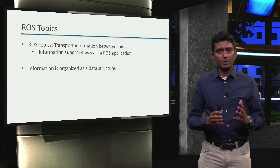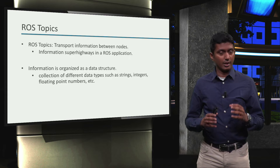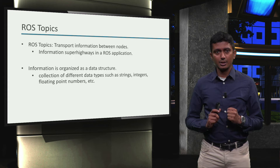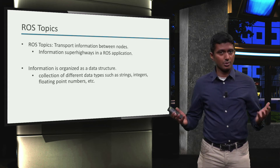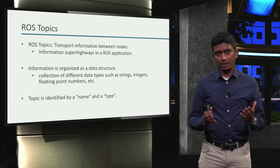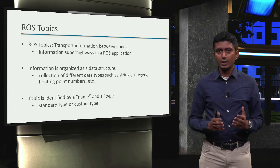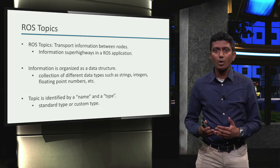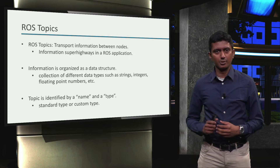Information is organized in a ROS topic as a data structure. A topic can be created out of a collection of basic data types, such as strings, integers, floating point numbers, and so on. A ROS topic is defined by a name and a type. A ROS topic can be of a standard type like the ones mentioned, or they could be of a custom type. We will learn more on this in the next module.